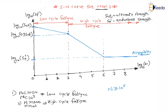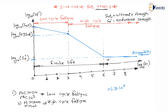Whenever the life of a component is less than 10⁶ revolutions — meaning the component fails before completing 1 million revolutions — the life of the component is called finite life. And once a component fails after completing 10⁶ revolutions, that is 1 million revolutions, then the life is called infinite life.